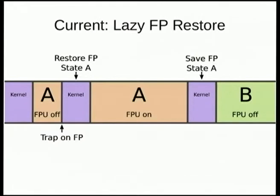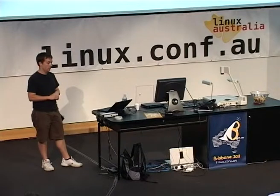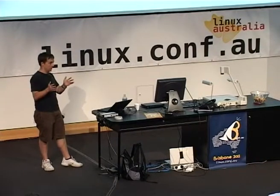At the end of the time slice, the kernel knows that A used the floating point unit, so it always saves away that state. Then it calls into the scheduler. The scheduler decides to run B and we restore B — but here we restore B with the floating point unit off. This means that with this mechanism, if A and B are not floating point tasks, we never have to actually save and restore the floating point state. And it's on a per-time-slice basis.